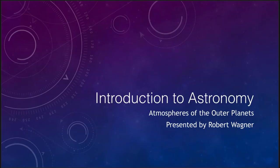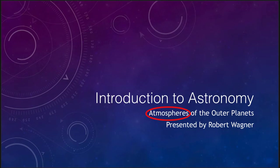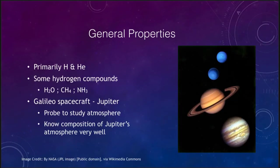Greetings and welcome to the introduction to astronomy. In this video we are going to continue talking about the giant planets, but most specifically their atmospheres. So now we're going to look at the outer layers, the areas that we can actually see of these objects and try to better understand those. These are the areas that have been explored and photographed by various spacecraft. So let's get started with some of the general properties of these planets.